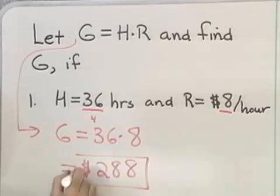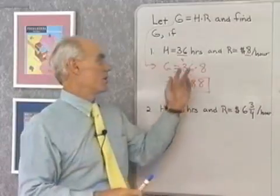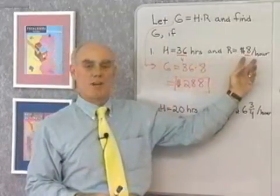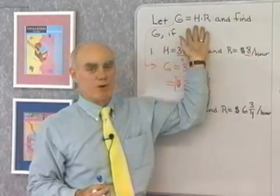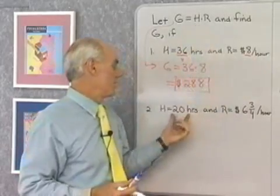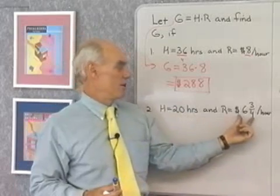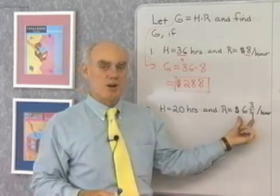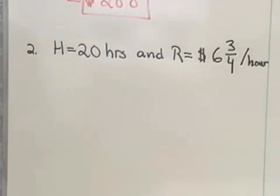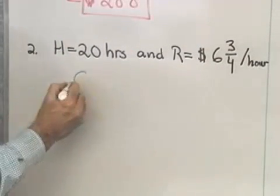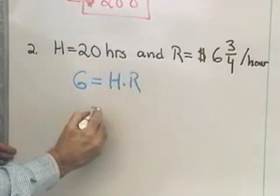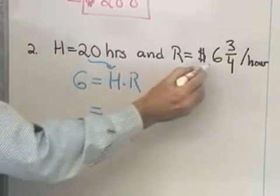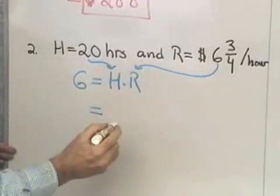That will be the gross pay that you will make if you work 36 hours a week at a rate of $8 per hour. Now that's something that you already know, but all we did is put it in the form of a formula. Let's do the same problem again, but with H equal to 20 hours and R equal to 6 and 3 quarters dollars per hour. So this time, what we're going to have is that G will be equal to H times R. Since H is equal to 20, and R is equal to 6 and 3 quarters, I'll have 20 times 6 and 3 quarters.